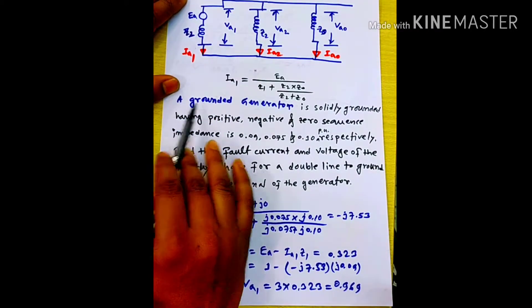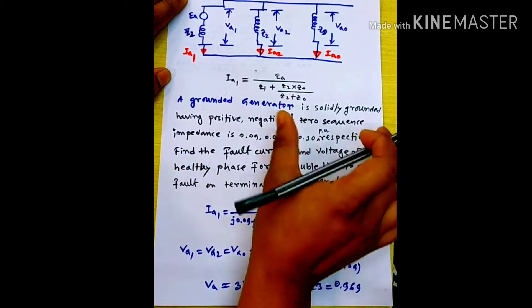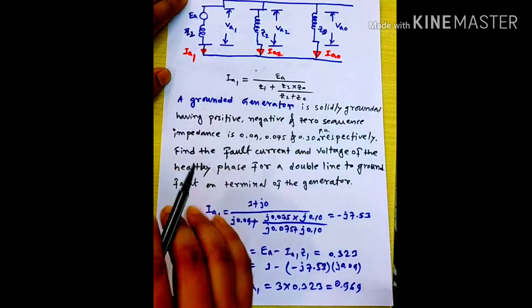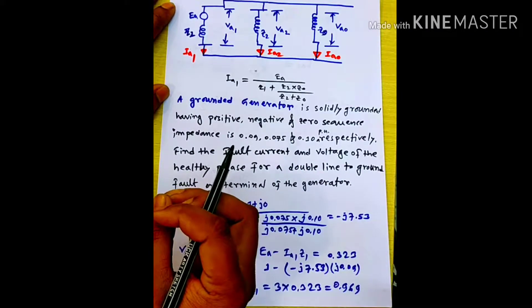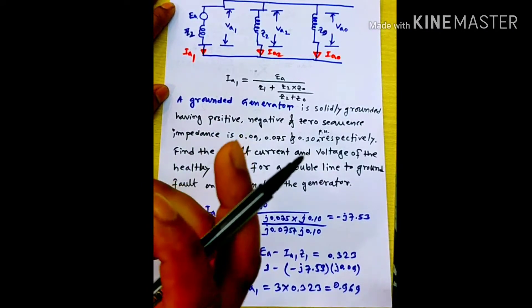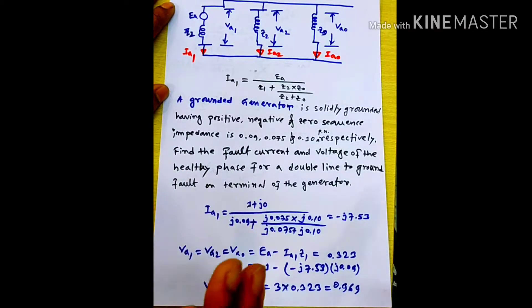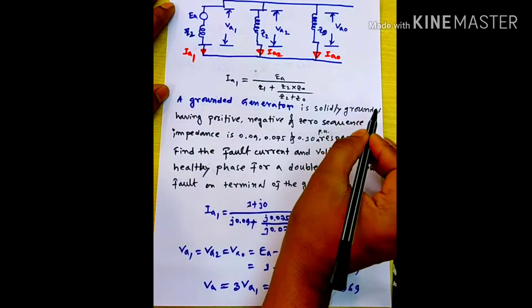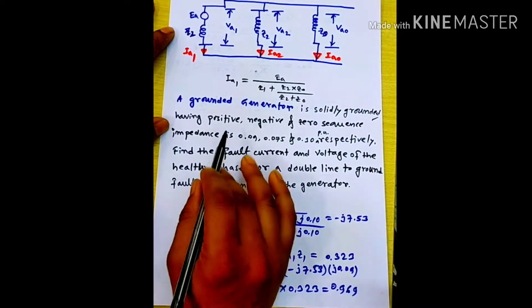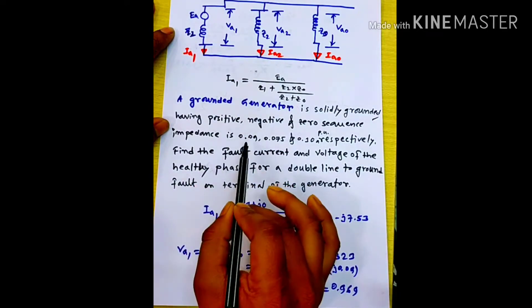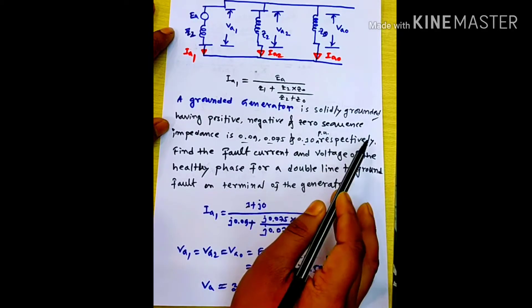This grounded generator is solidly grounded. When the generator neutral is grounded, we are not going to use a grounding resistor or reactor — we are going to be solidly grounded. A solidly grounded generator has positive, negative, and zero sequence impedance, given per unit respectively.